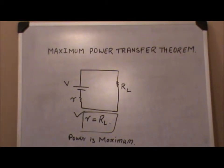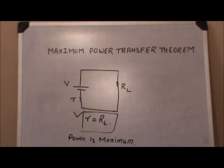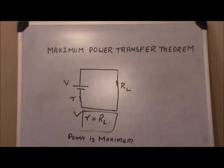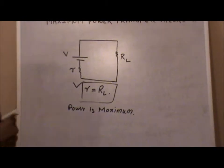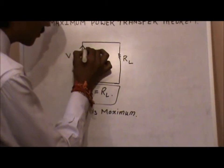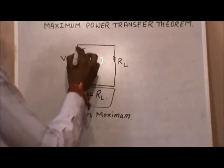Now we go to the proof and explanation, because university examiners want to know how much in-depth analysis a student has for a particular theorem. Questions will appear like: state, explain, and prove this Maximum Power Transfer Theorem. So we are going into the explanation part, where first we will calculate the value of current i flowing through this circuit.